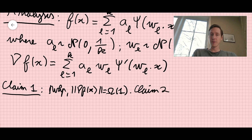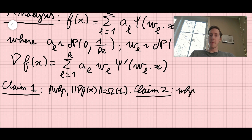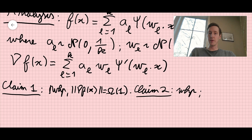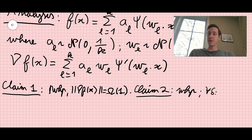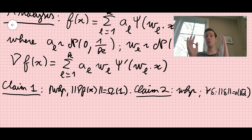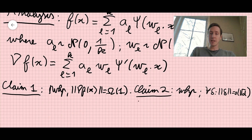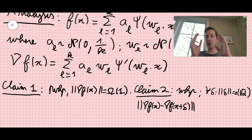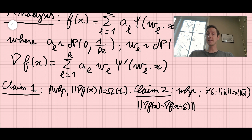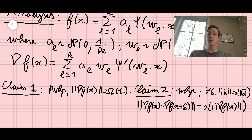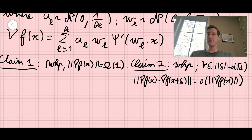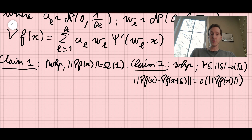Claim 2 states: with high probability, for any delta such that the norm of delta is little-o of sqrt(d), the norm of grad f(x) minus grad f(x + delta) is little-o of the norm of the gradient. So we perturb to x+delta and see how the gradient changes — this change is little-o of the gradient norm.